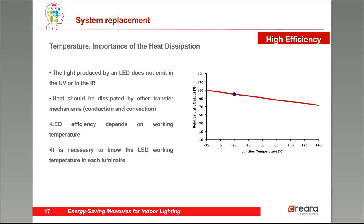Temperature is also an important factor in LED efficiency — maybe the most important factor. Remember, the light produced by an LED does not emit in the UV or higher range, so the heat should be dissipated by other transfer mechanisms: conduction or convection. The graph on the right shows how efficiency decreases with the system temperature — as the temperature increases, LED performance and efficiency are lower. So we need a dissipator. One of the most important parts of LED luminaires is the heat dissipator, which helps the heat transfer so the temperature won't become too high.